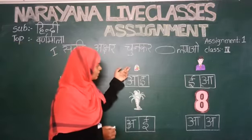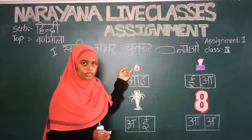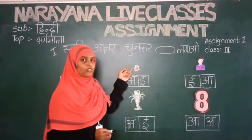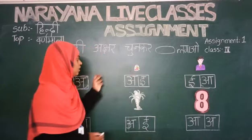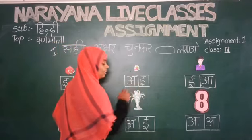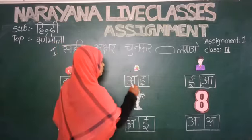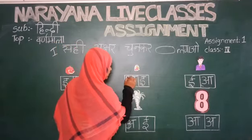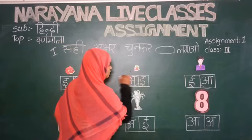Next, see what it is — it is Amrud, guava. What is the first letter? A. We have A and E. What is the correct answer? A. Then we should circle the A.